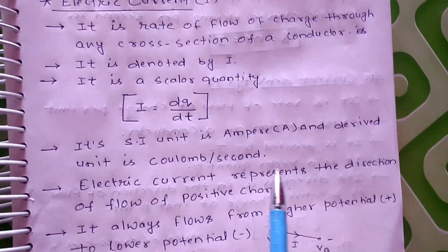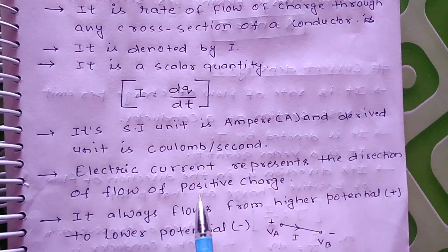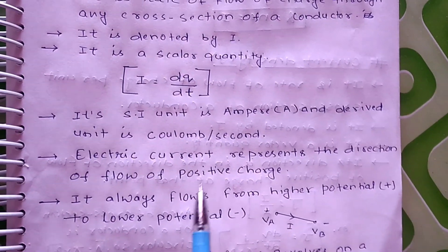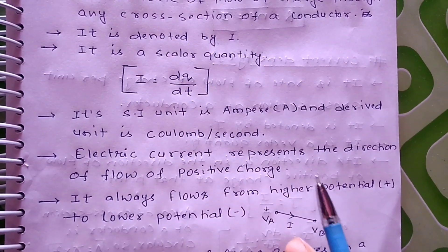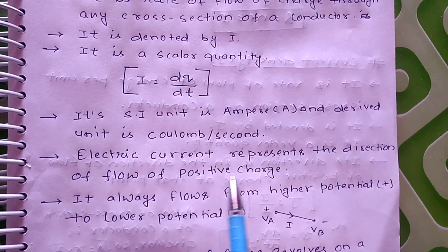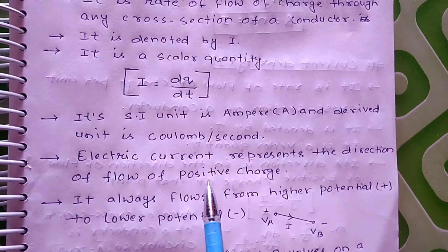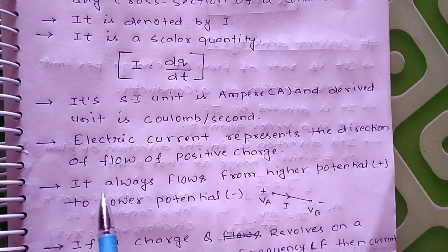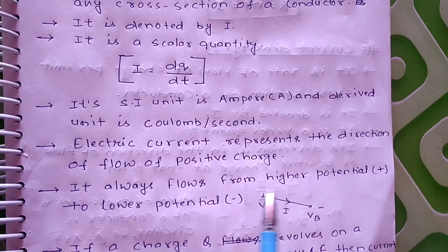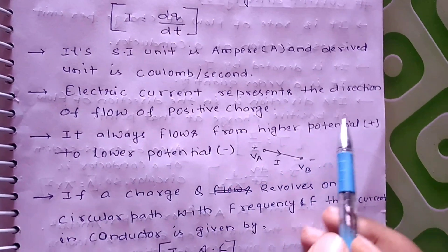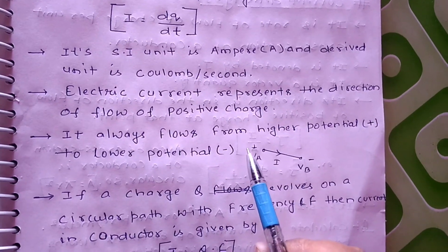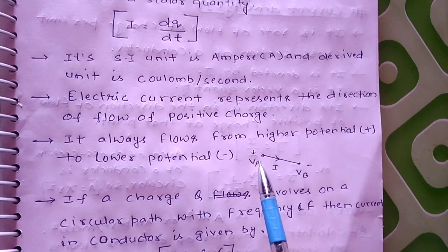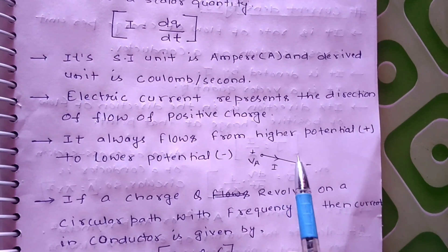Electric current represents the direction of the flow of positive charge. If there is a flow of charge, one atom will give positive charge and another will give negative charge. The electric current represents the direction of positive charge flow. It always flows from higher potential to lower potential.